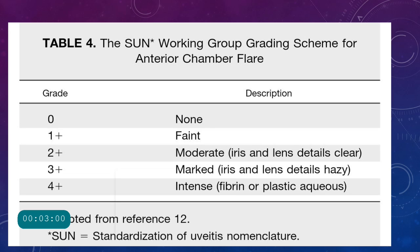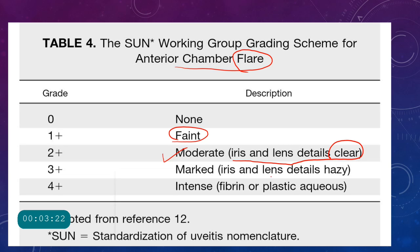The SUN working group also grades anterior chamber flare in four grades. Plus 1 is faint flare, barely detectable. Plus 2 is moderate — iris and lens details are still clear. Plus 3 is marked flare where details are hazy. Plus 4 is intense flare where fibrin is present, the aqueous is plastic, and iris and lens details cannot be made out.